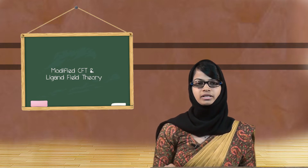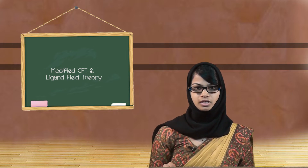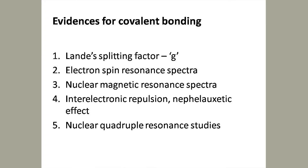Now, if we consider that covalent bonding is involved, we need evidence for that. Without evidence, we cannot prove that it is a covalent bond. We have five evidences for the covalent bonding nature of the coordination metal complexes. The first evidence is given by the Landé splitting factor g, the second by ESR or electron spin resonance spectra, the third by NMR or nuclear magnetic resonance spectra, the fourth from inter-electronic repulsion through the nephelauxetic effect, and the last through nuclear quadrupole resonance spectral studies, or NQR studies.